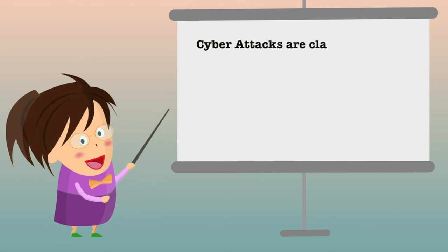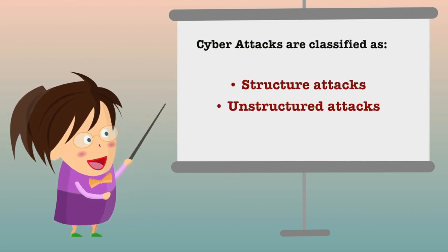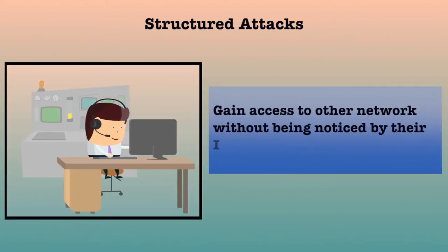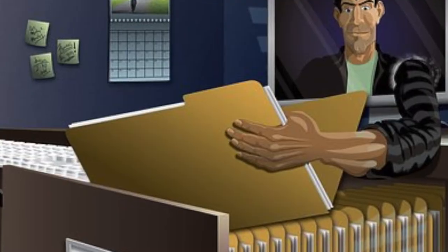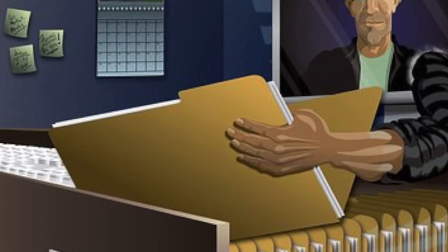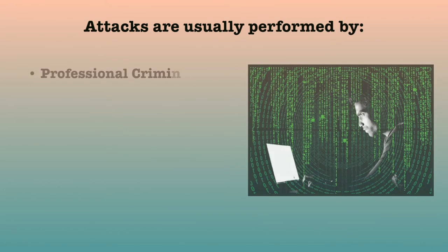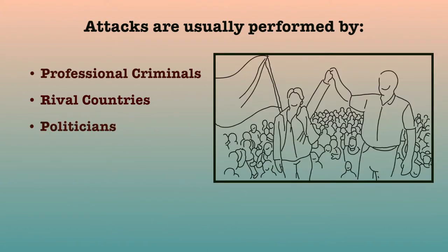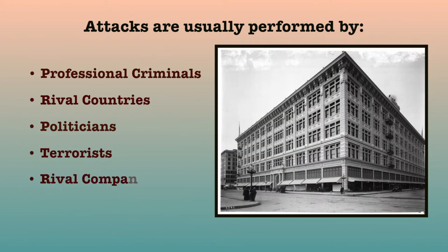Cyber attacks can also be classified as structured attacks and unstructured attacks based on the level of maturity of the attackers. Structured attacks are performed by highly skilled and experienced people and the motive of these attacks is clear in their mind. They have access to sophisticated tools and technologies to gain access to networks without being noticed by intrusion detection systems. Moreover, these attackers have the necessary expertise to develop or modify existing tools to satisfy their purpose. These types of attacks are usually performed by professional criminals, by a country on rival countries, politicians to damage the image of a rival person or country, terrorists, rival companies, etc.